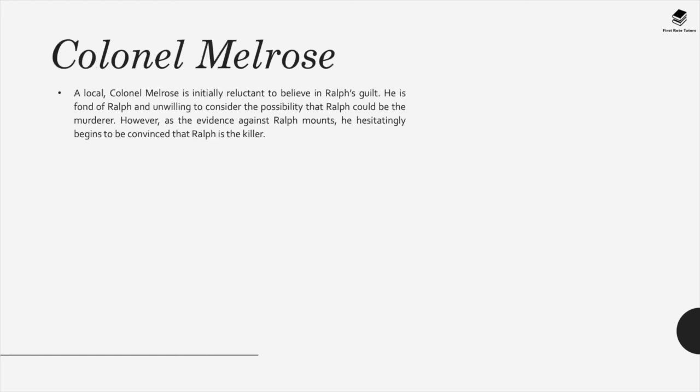Colonel Melrose, a local colonel, is initially reluctant to believe in Ralph's guilt. He is fond of Ralph and unwilling to consider the possibility that Ralph could be the murderer. However, as the evidence against Ralph mounts, he hesitatingly begins to be convinced that Ralph is the killer.